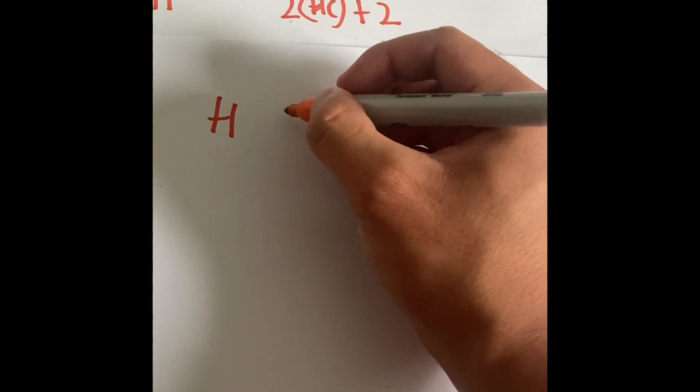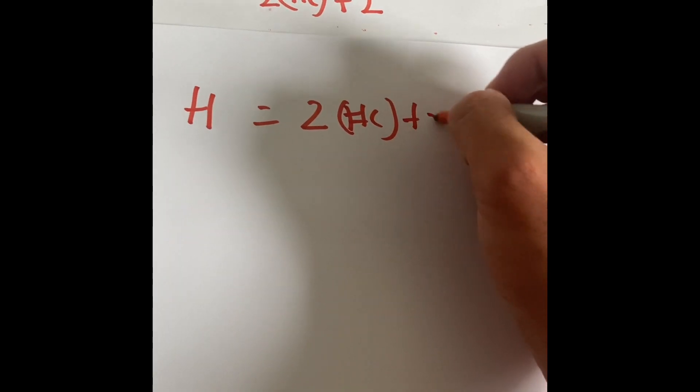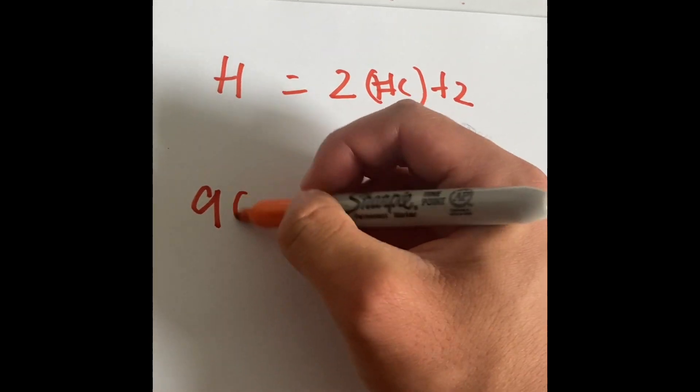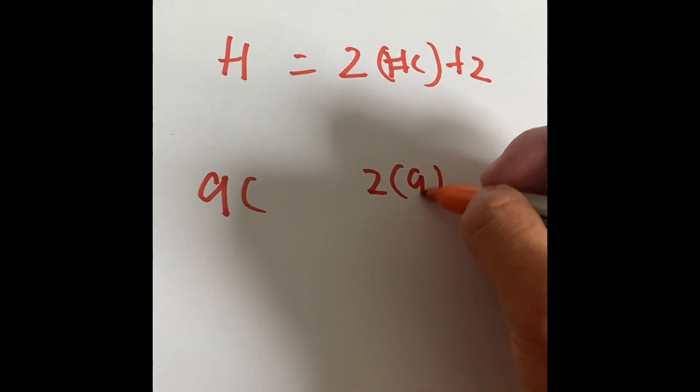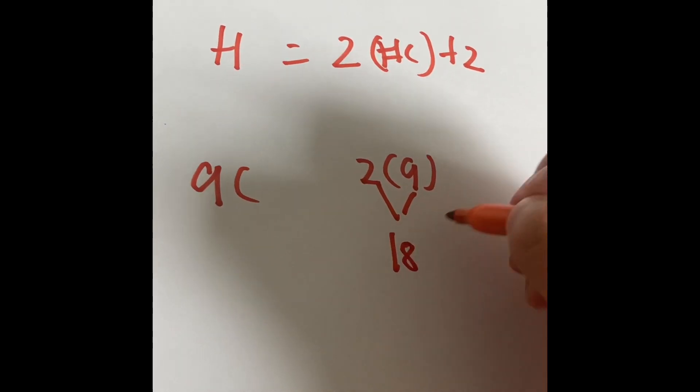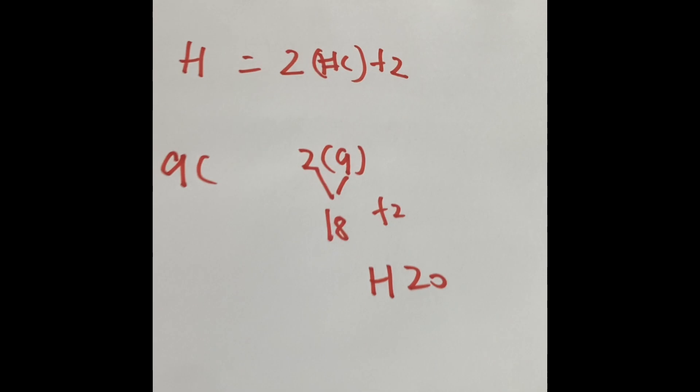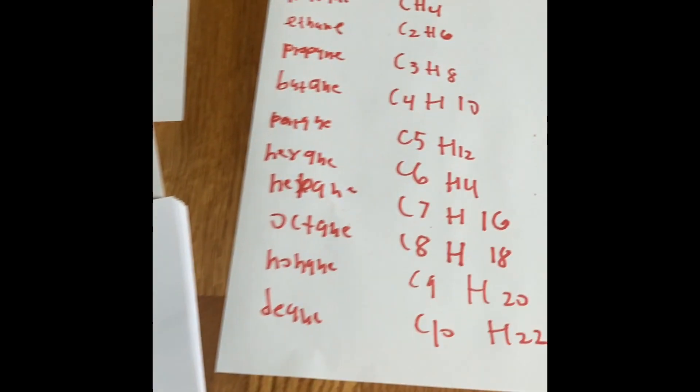Let's do another example. So what happens if we have nine carbons? To find the number of hydrogens, two times nine is eighteen, plus two is twenty. Twenty hydrogens. And that is how we find how many hydrogens are in an organic bond.